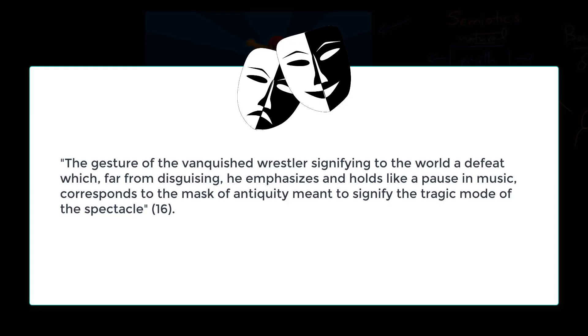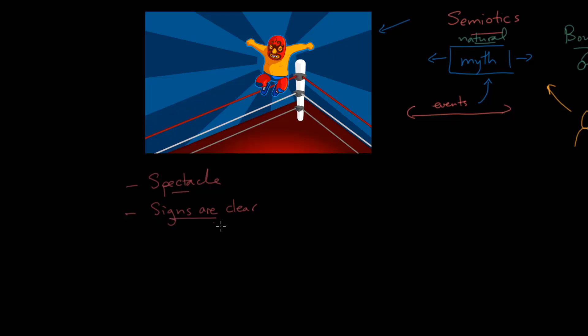And when it comes to wrestling, he says there is a kind of pure and full signification. In other words, every sign is super obvious in what it means. He writes at one point, the gesture of the vanquished wrestler, so the wrestler who's on the mat, you might say, who's being beaten, signifying to the world a defeat which far from disguising he emphasizes and holds like a pause in music, corresponds to the mask of antiquity meant to signify the tragic mode of the spectacle. So in ancient times they would have these masks on to signify, if they were laughing or crying, and it was very obvious. In the same way here, the signs are super, super clear. You're not going to be mistaken about what a particular move in wrestling or a particular pose represents.